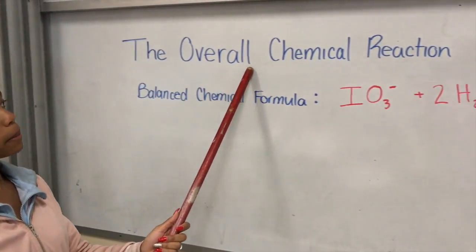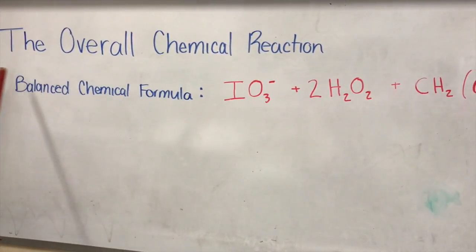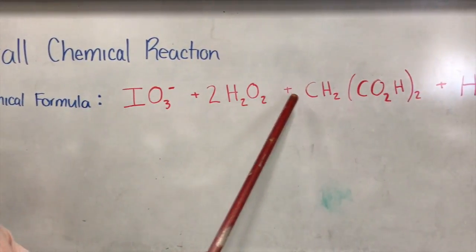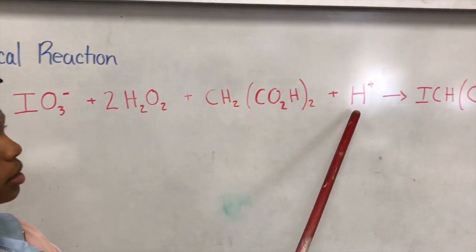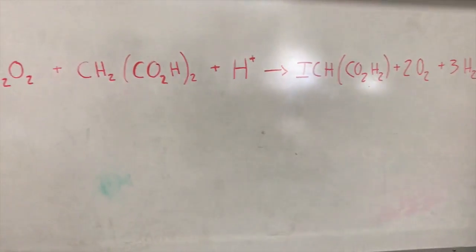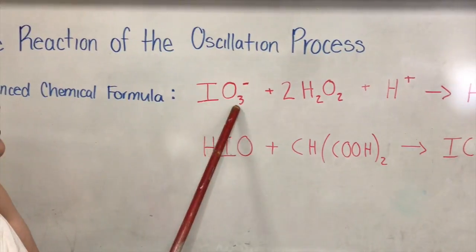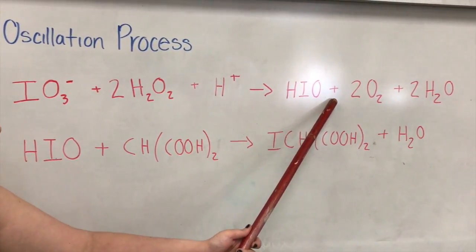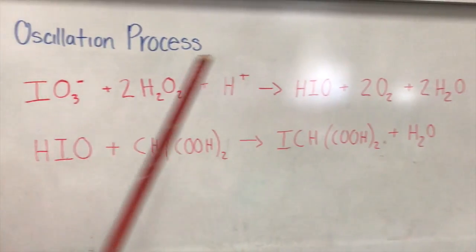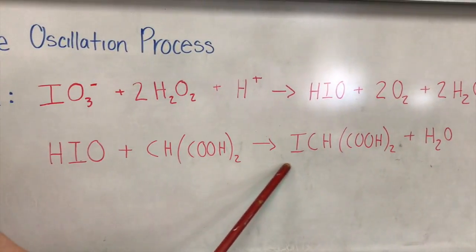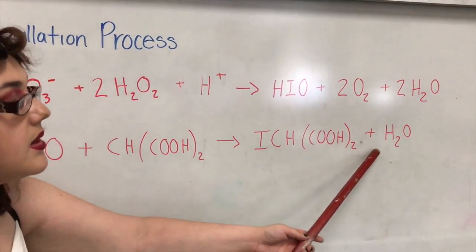The overall chemical reaction for the balanced chemical formula is iodate plus hydrogen peroxide plus malonic acid plus hydrogen yields ICHCO2H2 plus oxygen and water. The two reactions for the oscillation process is iodate plus hydrogen peroxide plus hydrogen yields HIO3- plus oxygen plus water. The second reaction is HIO3- plus malonic acid yields ICHCO2H2 plus water.